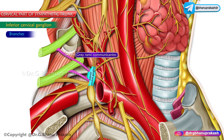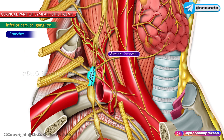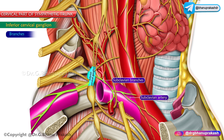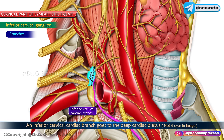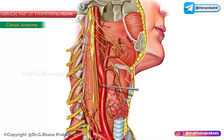The branches from the inferior cervical ganglion include gray rami communicantes to the ventral rami of C7 and C8, vertebral branches forming a plexus around the vertebral artery, subclavian branches forming a plexus around the subclavian artery, and an inferior cervical cardiac branch going to the deep cardiac plexus.